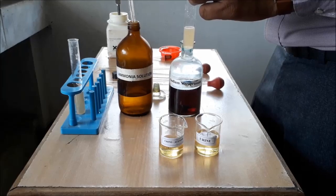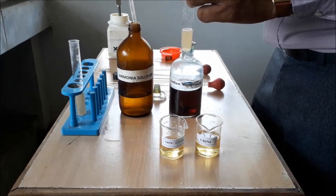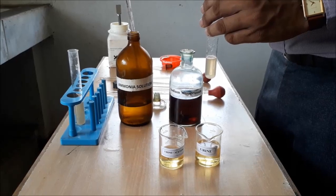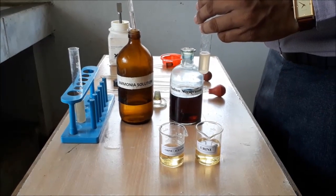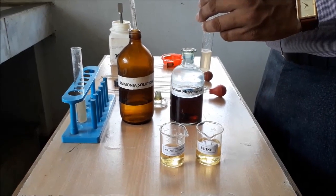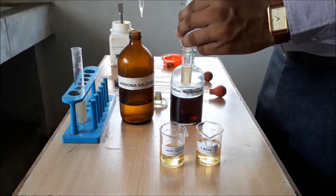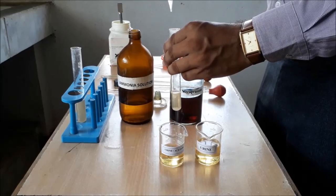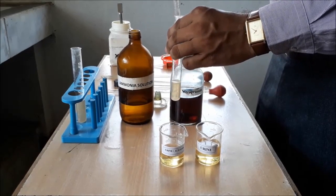Then, we have to add 2 ml of strong ammonia solution with the help of pipette from the wall of test tube. We are just adding 2 ml of the strong ammonia solution.